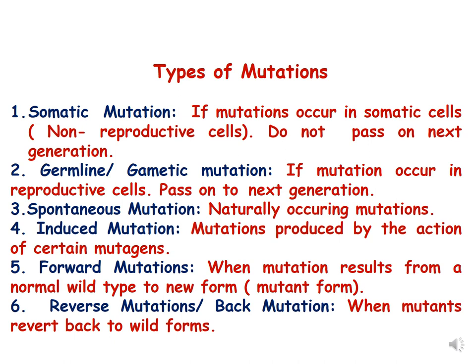Naturally occurring mutations are called spontaneous mutations. When mutations are produced by the action of an agent, they are called induced mutations, and this agent is called a mutagen. Mutations produced by the action of a physical or chemical mutagen are called induced mutations. Forward mutations result from a normal wild type to a new form, while reverse mutation or back mutation is when mutants revert back to wild or normal forms.